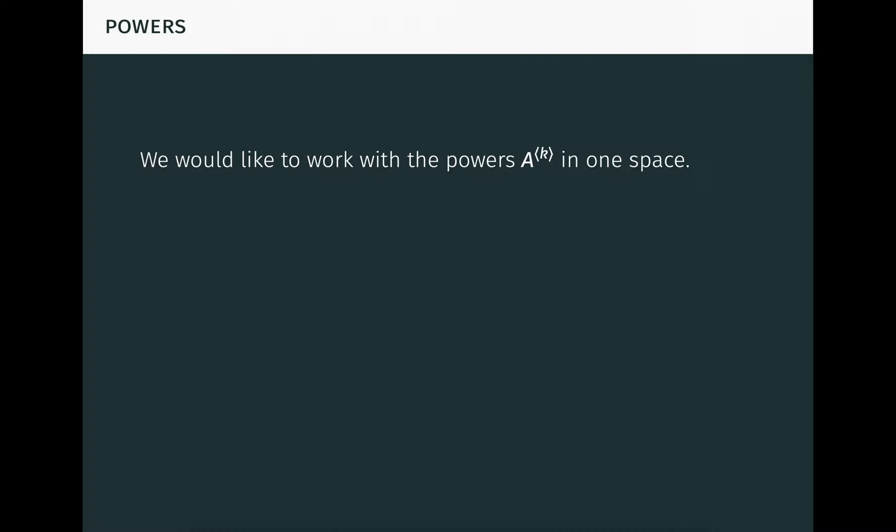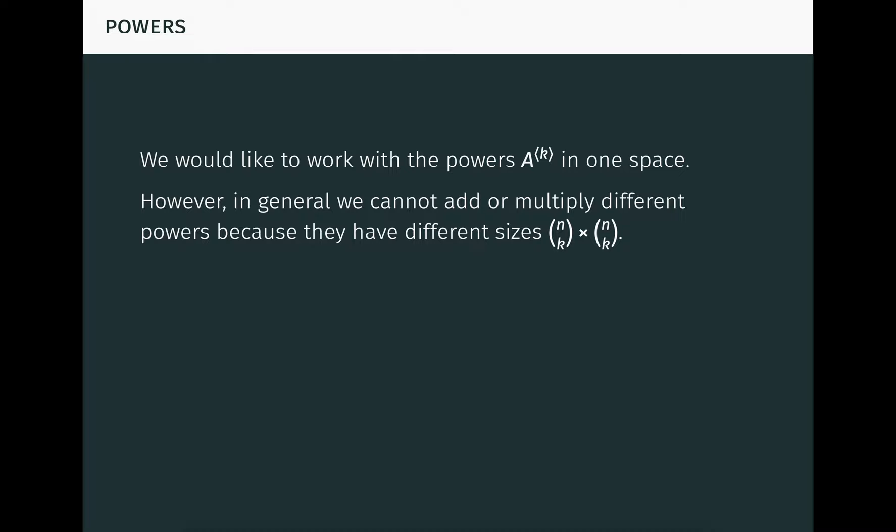To study compound powers more deeply, we'd like to work with all of the powers of A together in one space. However, in general, we can't add or multiply different powers because they have different sizes, n choose k by n choose k. In searching for a solution to this problem, we recall from the binomial formula that 2 to the n, which is just 1 plus 1 to the n, is the sum of n choose 0 through n choose n. This suggests that we can combine all of the compound powers of A into a single 2 to the n by 2 to the n matrix, and leads us to a definition.